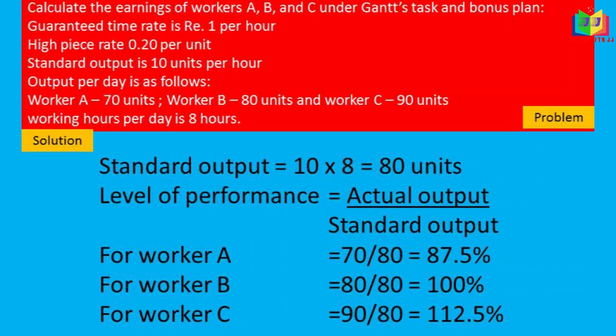The level of efficiency is calculated as: actual output divided by standard output × 100. For Worker A: 70 ÷ 80 = 87.5%. For Worker B: 80 ÷ 80 = 100%. For Worker C: 90 ÷ 80 = 112.5%. Based on these efficiency levels, we determine the earnings for each worker.